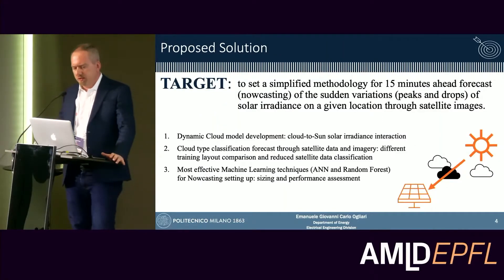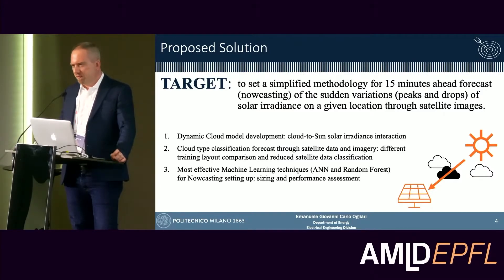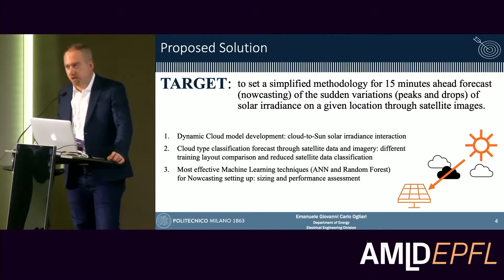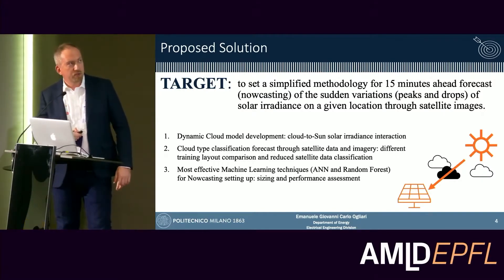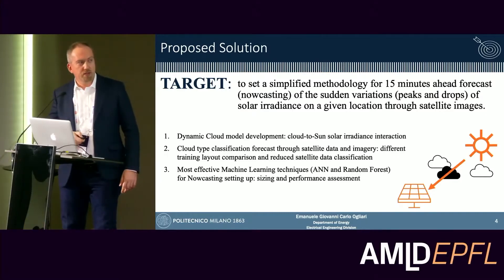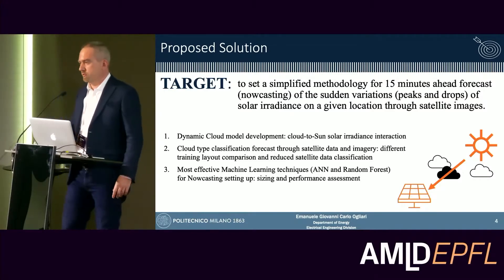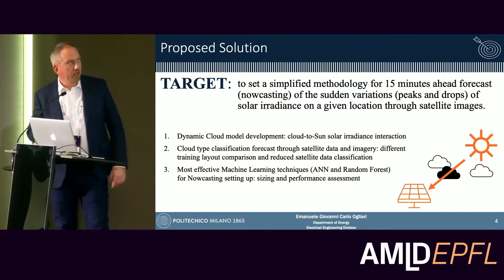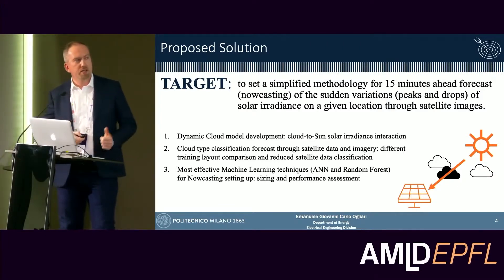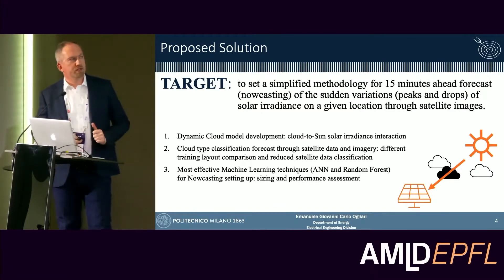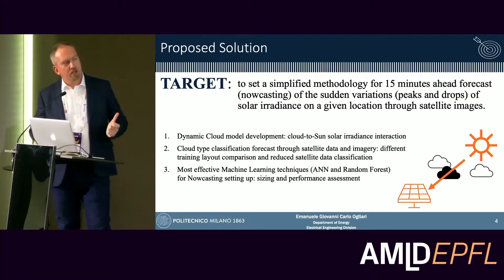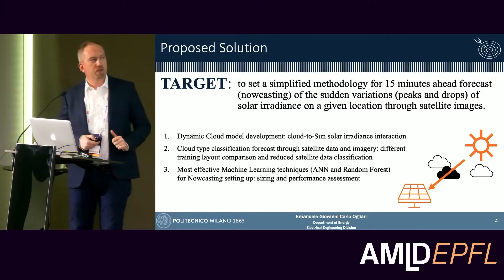The main target is to establish a simplified methodology for 15-minutes-ahead forecasting of sudden variations in solar irradiance at a given location using satellite images. We built a dynamic cloud model able to detect clouds affecting solar radiation between the sun and the photovoltaic module location. Cloud type classification was analyzed with different training layouts, comparing reduced satellite data classifications using artificial neural networks and random forests.